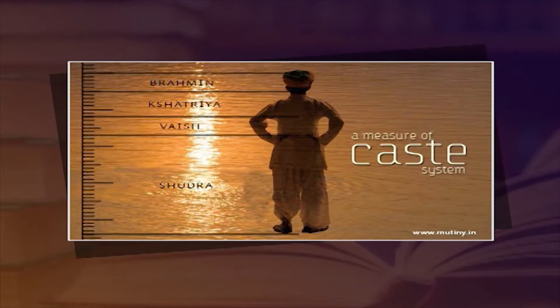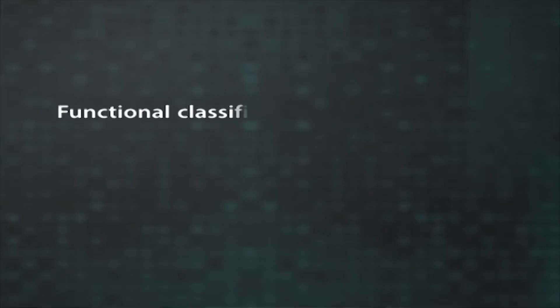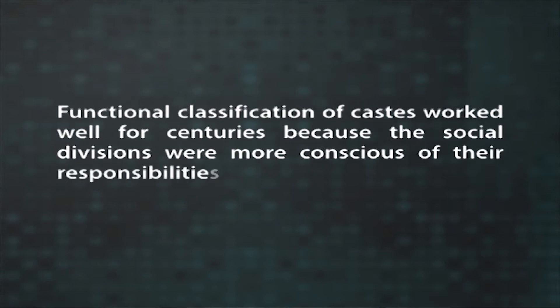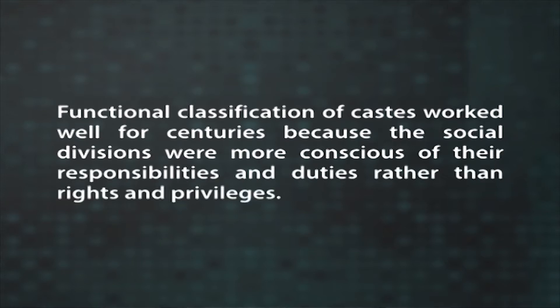In tracing the origin of caste, people are greatly influenced by the facts recorded in ancient sacred works such as the Vedas, Upanishads, Puranas and Dharmasastras. The commonly known system, mentioned in Purusha Sukta, is the fourfold division of society into Brahmanas, Kshatriyas, Vaishyas and Sudras. Caste, as conceived by the Varna theory, had flexibility and rested on the intrinsic qualities of individuals. This functional classification of caste worked well for centuries because social divisions were more conscious of their responsibilities and duties rather than rights and privileges, and it emphasized more on the spirit of cooperation.